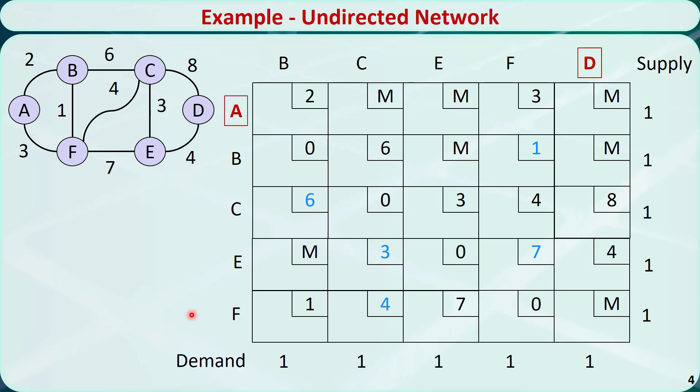This is a balanced transportation problem. We can solve the problem using the transportation simplex method as well. The optimal solution is shown in the tableau, which corresponds to this path in the network. The z value is 14.